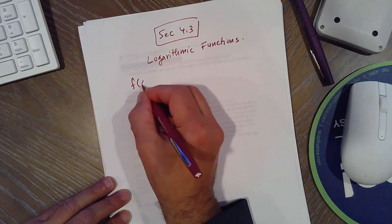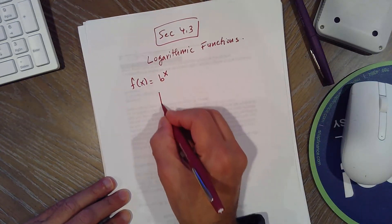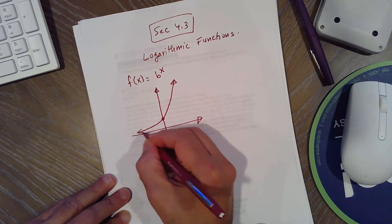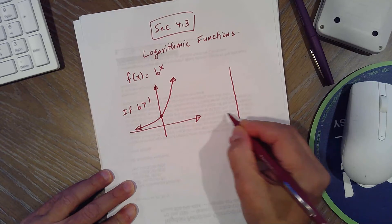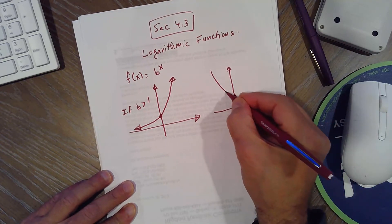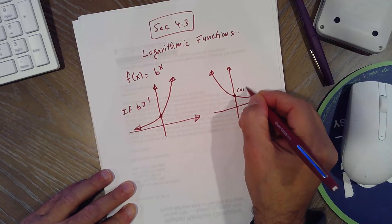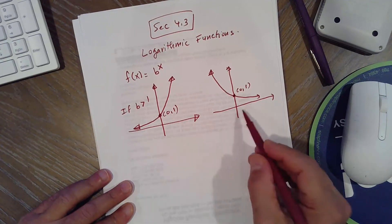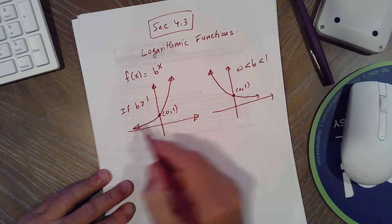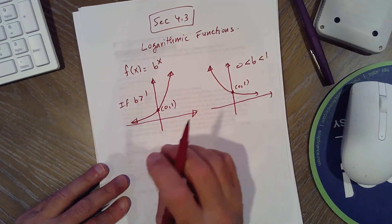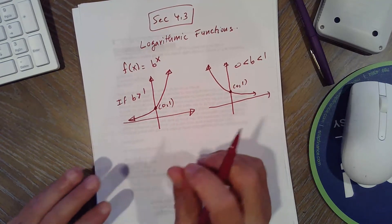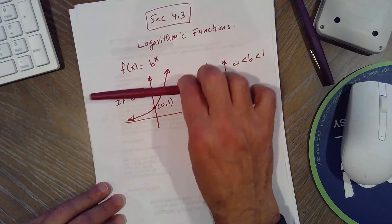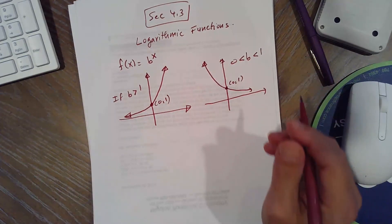If you recall exponential functions, f(x) equals b to the x, there are two forms: exponential growth if b is greater than 1, and exponential decay if b is between 0 and 1. They both have a y-intercept at 1, no x-intercepts. In either case, the functions are one-to-one, and every one-to-one function has an inverse function. So we're going to discuss the inverse of exponential functions, because they pass the horizontal line test.